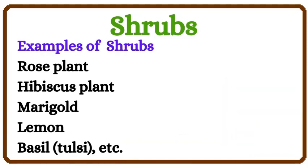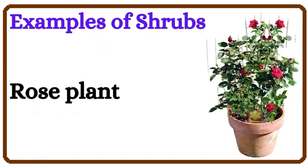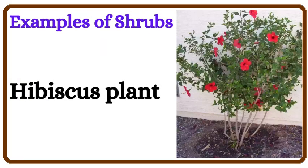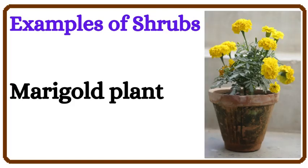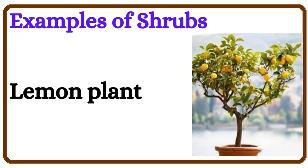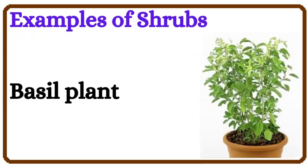Their stem is strong so they grow tall in their lifetime. Examples of shrubs: Rose plant, Hibiscus plant, Marigold plant, Lemon plant, Basil, Tulsi plant.